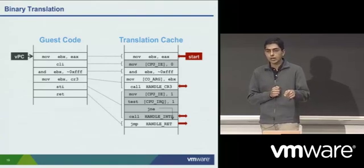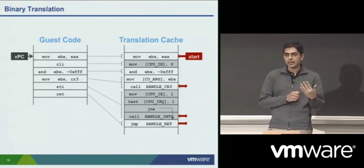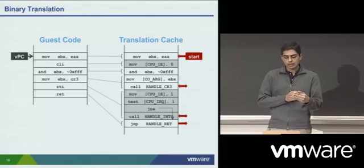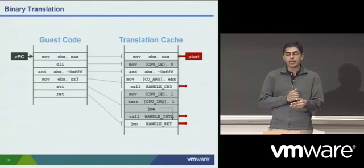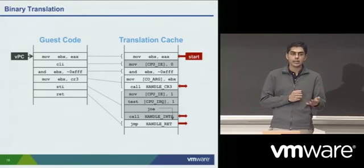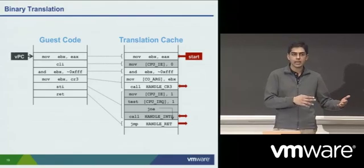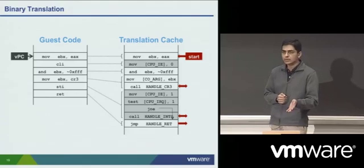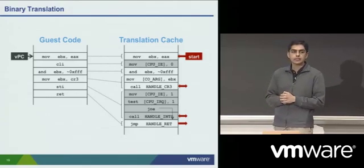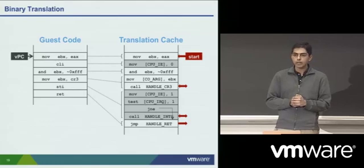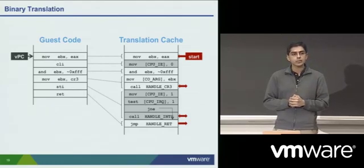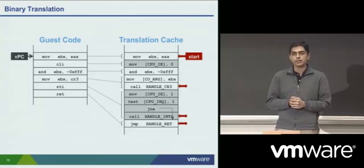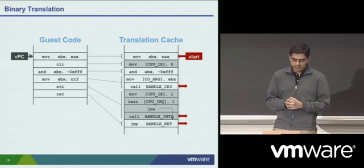The idea is not only that it helps with performance by avoiding certain traps, but also that binary translation can be used on architectures that do not support the trap-and-emulate strict virtualizability model. This was actually used, for example, in VMware's virtualization products for the x86 architecture in the late 1990s when the Intel x86 did not have any hardware virtualization support and was not strictly virtualizable.